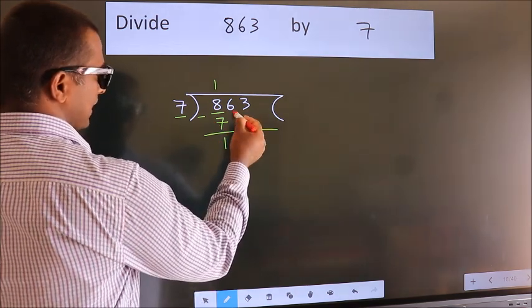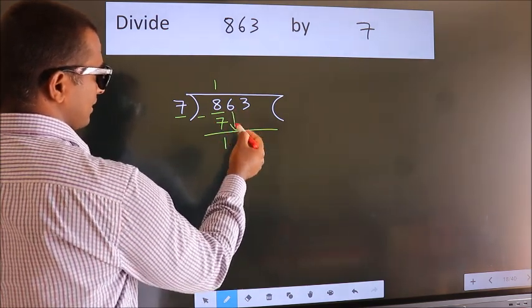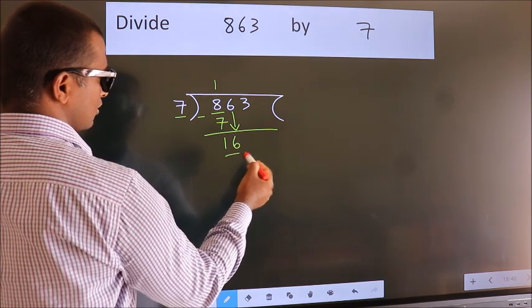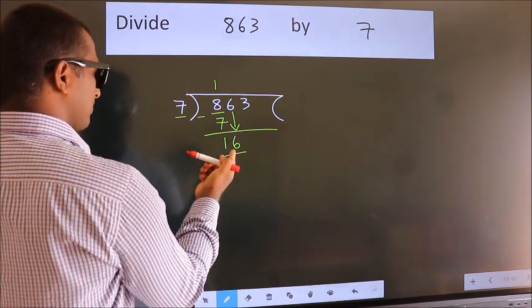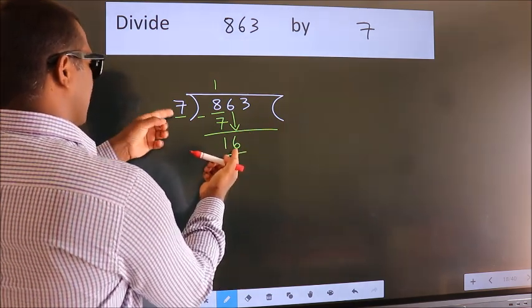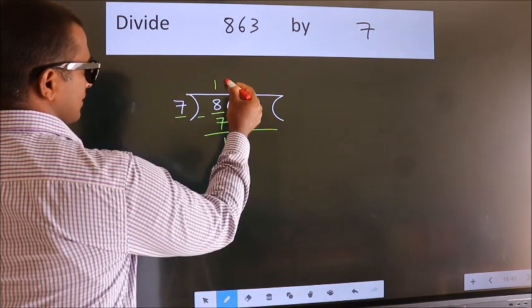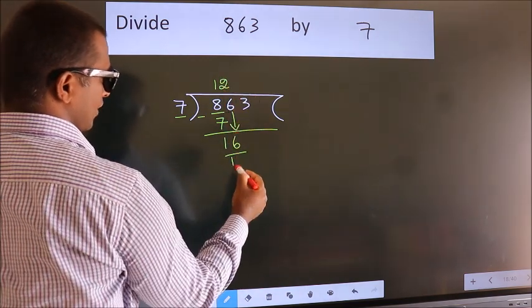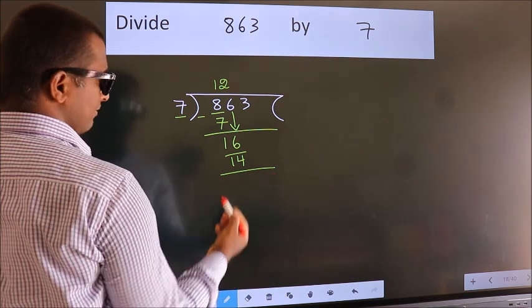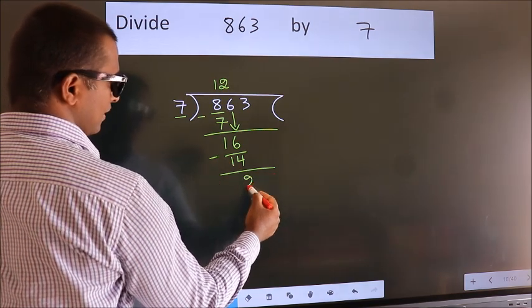After this, bring down the beside number. So 6 down. So 16. A number close to 16 in the 7 table is 7 twos 14. Now, we subtract. We get 2.